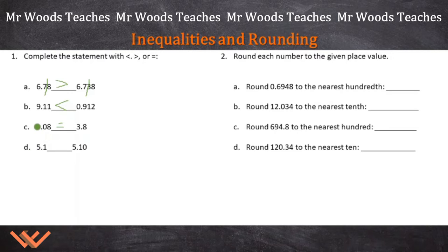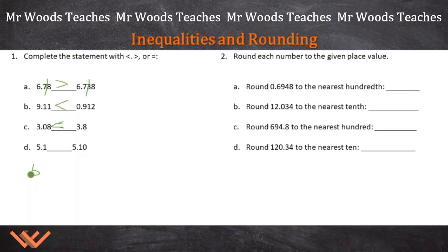3.08, or 3 and 8 hundredths, is actually less than 3.8, or 3 and 8 tenths. Then here's D: 5.1 and 5.10. Students think 10 is greater than 1, but 5.1 is actually equal to 5.10, because there's 1 tenth and 0 hundredths — same thing on both sides. That's where you use the equal sign.